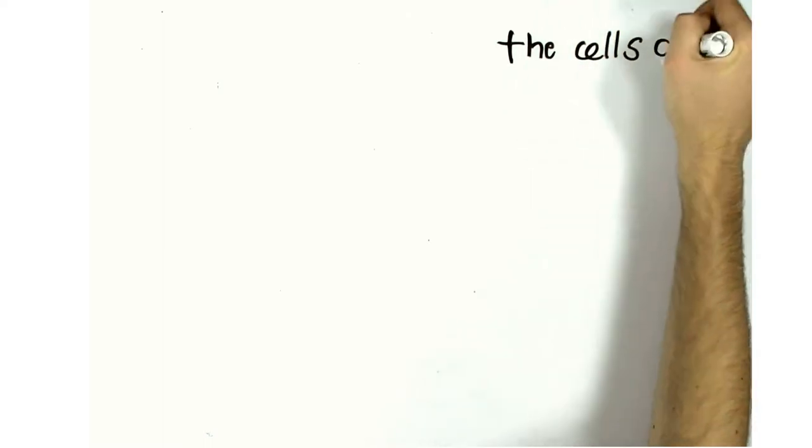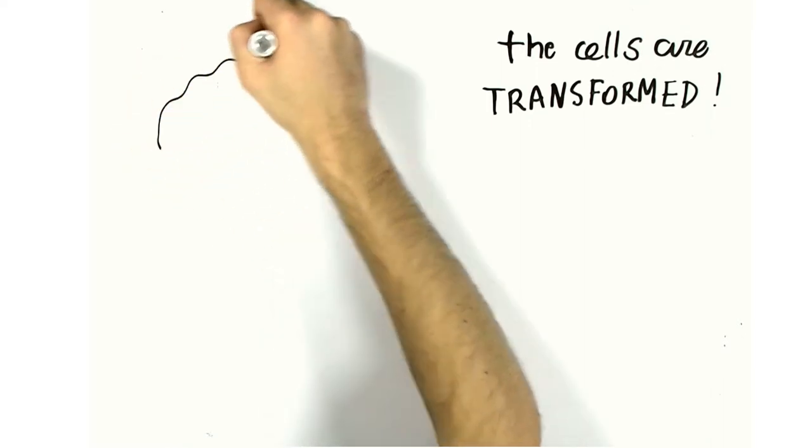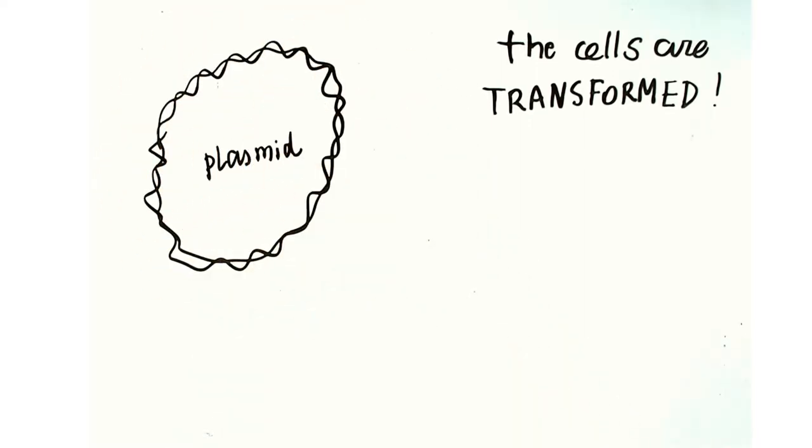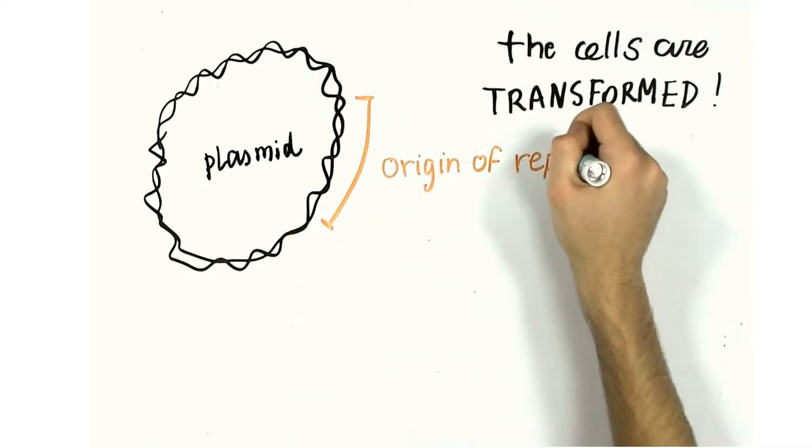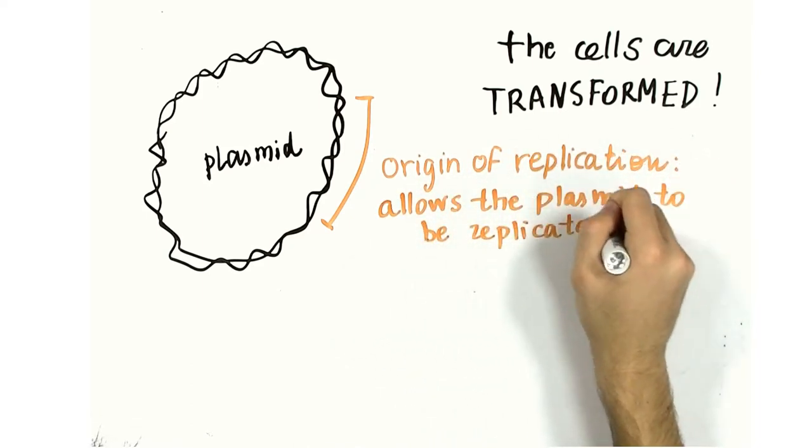After making competent cells, DNA is incorporated into the cell by a process called transformation. Typically, you place your genetic device on a plasmid backbone and transform the plasmid into E. coli. The plasmid needs an origin of replication, which allows it to be replicated in the cell independently of the chromosome of the cell.